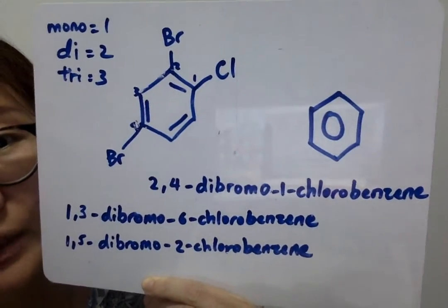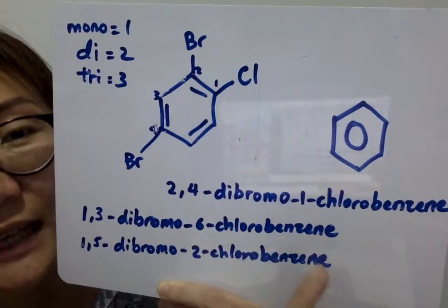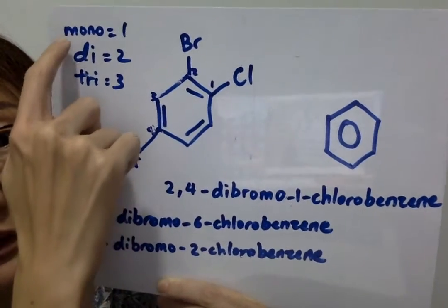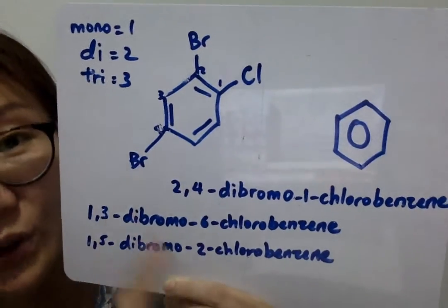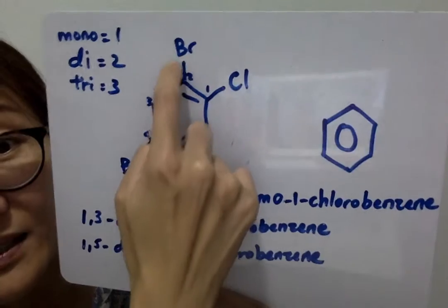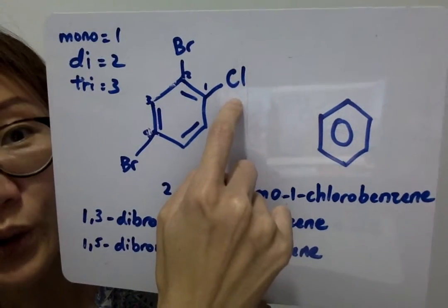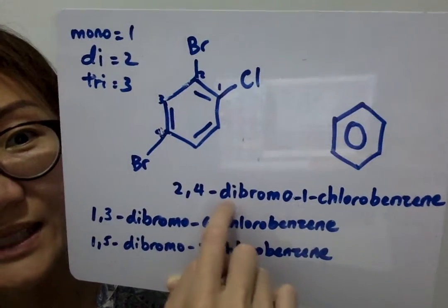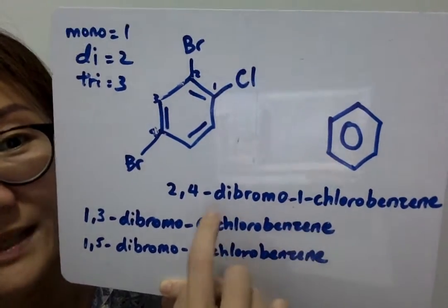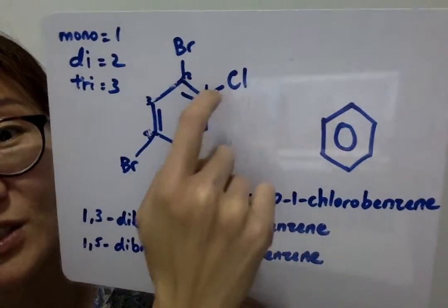In naming the compound, we have to consider the alphabetical order of the substituents directly, which means we consider the alphabetical order of B and C — bromine and chlorine — not the alphabetical order of the prefixes like mono, di, and tri. We consider the alphabetical order based on the substituents themselves. So bromo will come before chloro. We don't need to consider di or tri. If we had considered that, then chloro must come before di because C comes before D. But we don't do that in IUPAC. We look at the alphabetical order of the substituent itself.